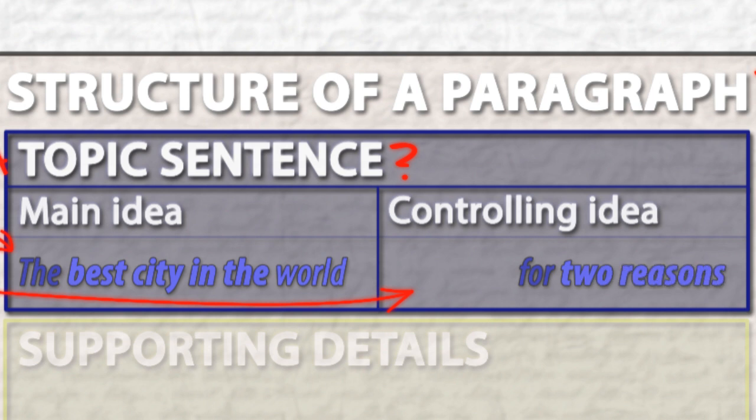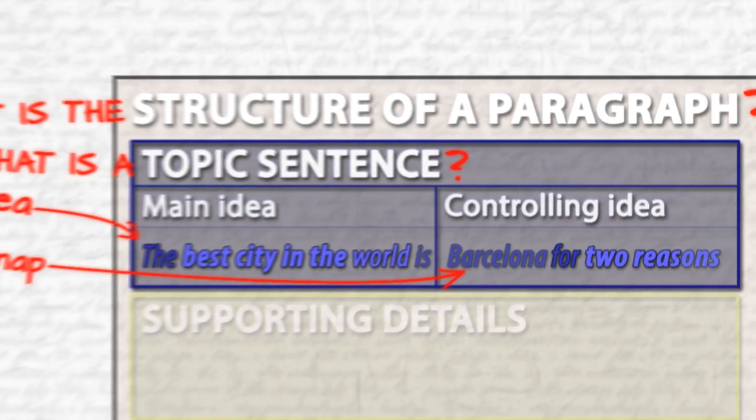An example of a controlling idea could be for many reasons or for two reasons. So, when you put these two things together, you create one topic sentence with two parts. An example would be, the best city in the world is Barcelona for two reasons.